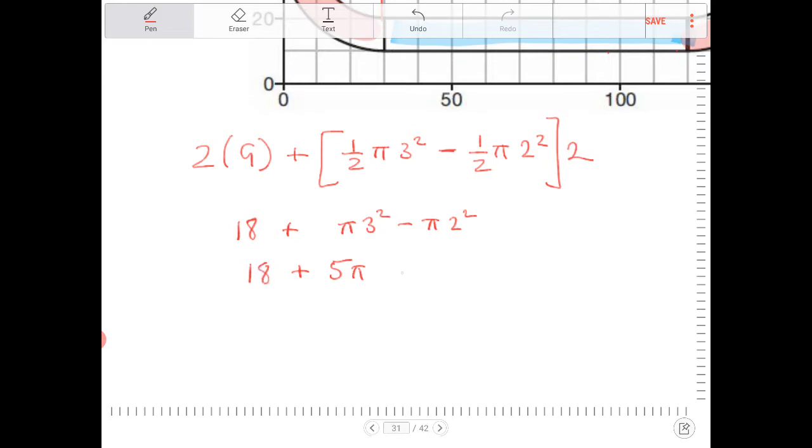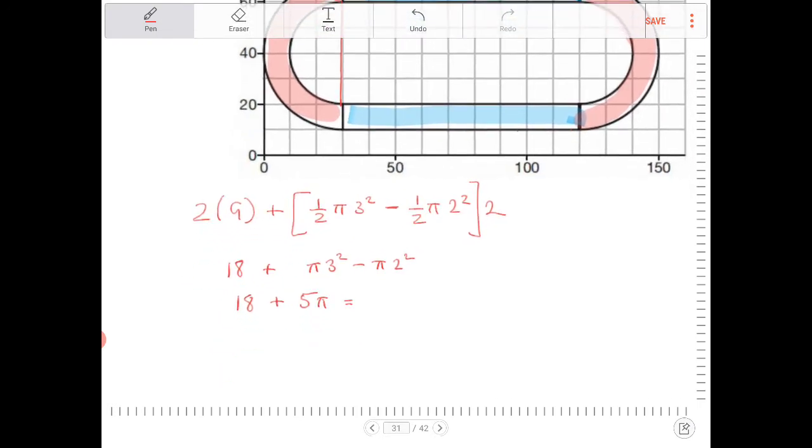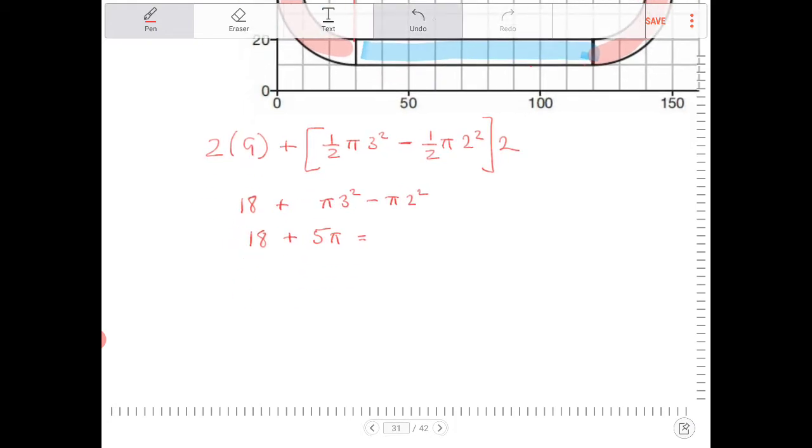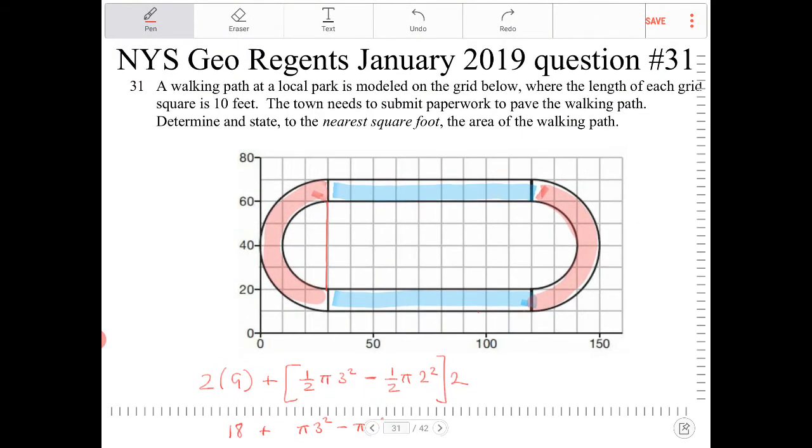So the total number of square grids, or the area of the shaded region there, is going to be 18 plus 5π. But we're going to need to figure out what is the actual square footage to the nearest square foot.